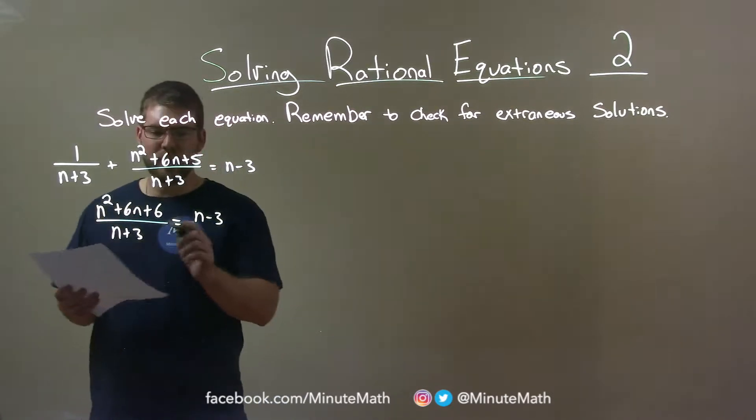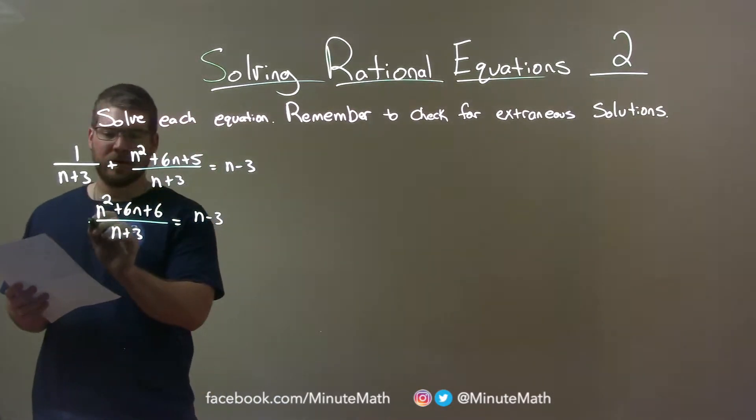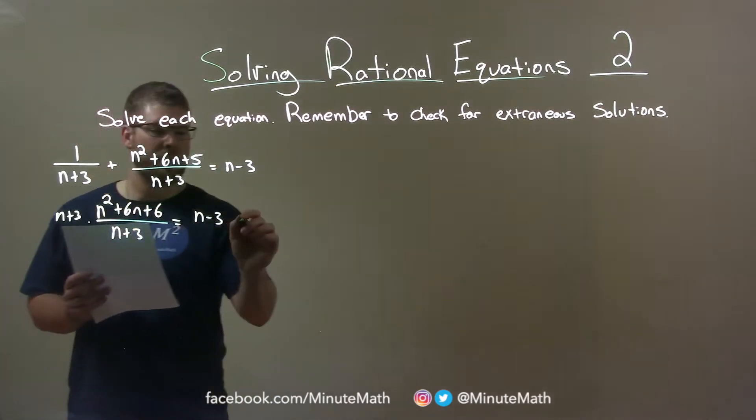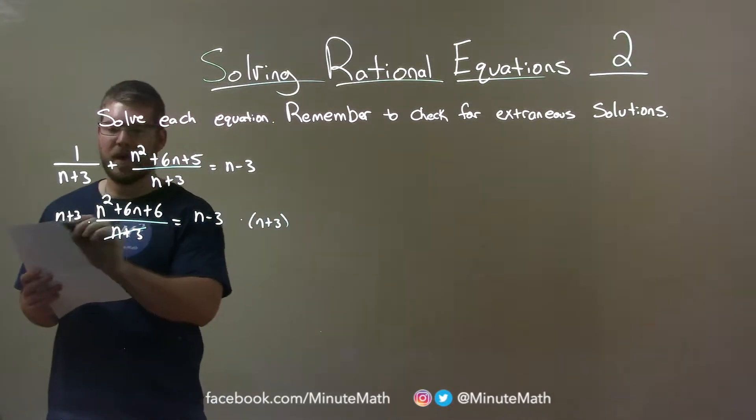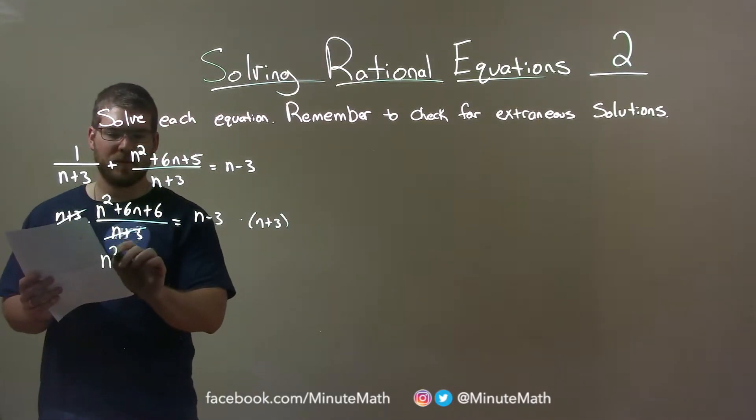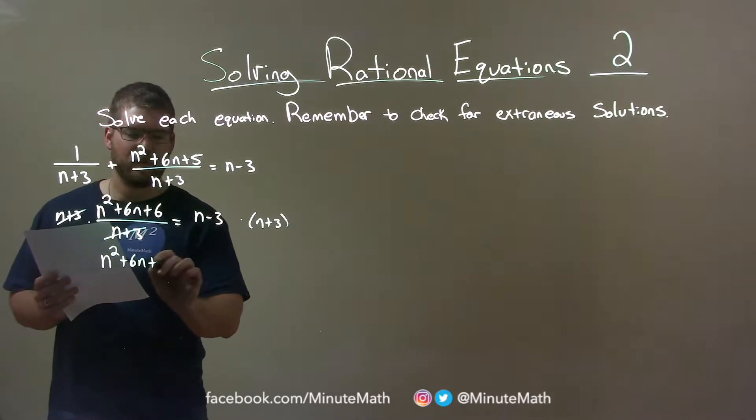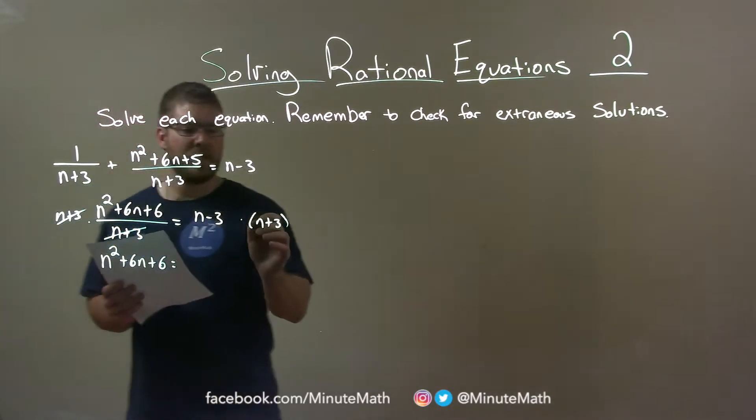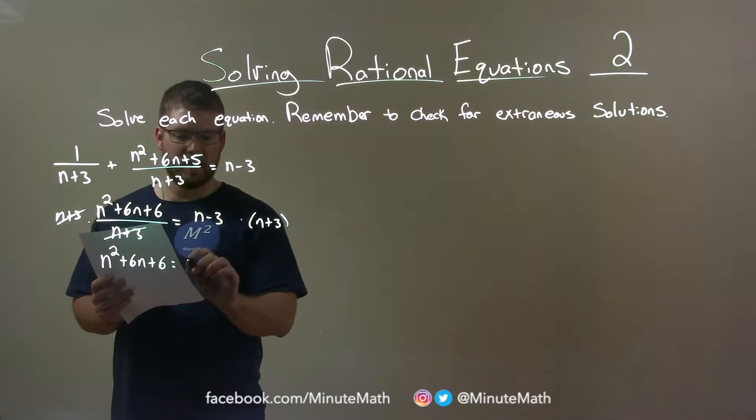Now, if I multiply both sides by this denominator, that denominator cancels, leaving me n squared plus 6n plus 6 here. And this multiplies, well, n times n is n squared, right?